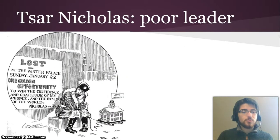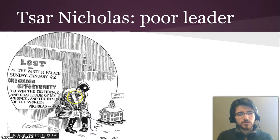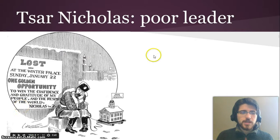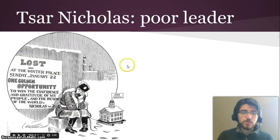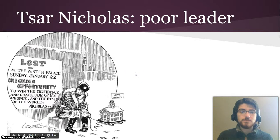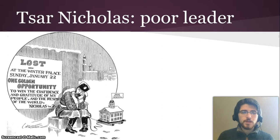Tsar Nicholas II was also a pretty poor leader. This political cartoon references not his poor leadership during World War I, but before that. In 1905, there was a revolution — not the one we're talking about, which starts in 1917 — but this one in 1905 was started because there were people protesting outside of the Winter Palace on what would later be called Bloody Sunday. Tsar Nicholas II wasn't able to meet any of the demands of the people, work with them, or their leaders, and eventually the guards fired into a crowd of unarmed protesters.